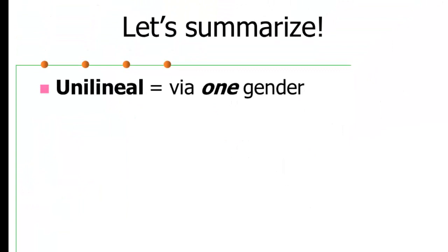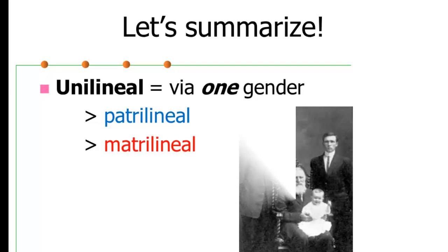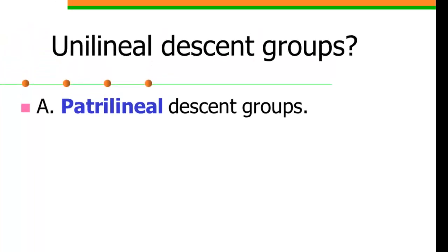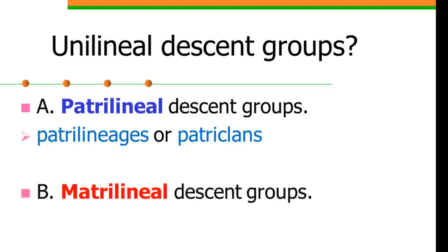So let's summarize. Unilineal means via one gender. There's two basic forms of unilineal descent, patrilineal and matrilineal. And this again shows four generations of males. There really aren't much in the way of patrilineages in the modern West, but you can still have patrilines. Unilineal descent groups also come in two forms: patrilineal descent groups that we call patrilineages or patroclans, and matrilineal descent groups that we call matrilineages or matroclans. And we'll discuss those more in the next presentation.